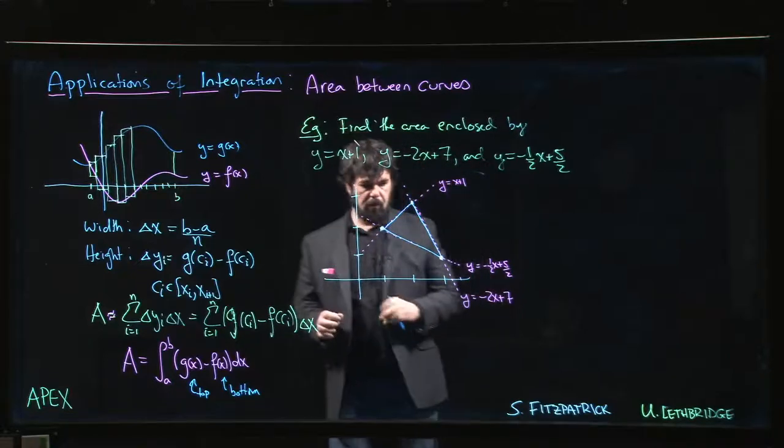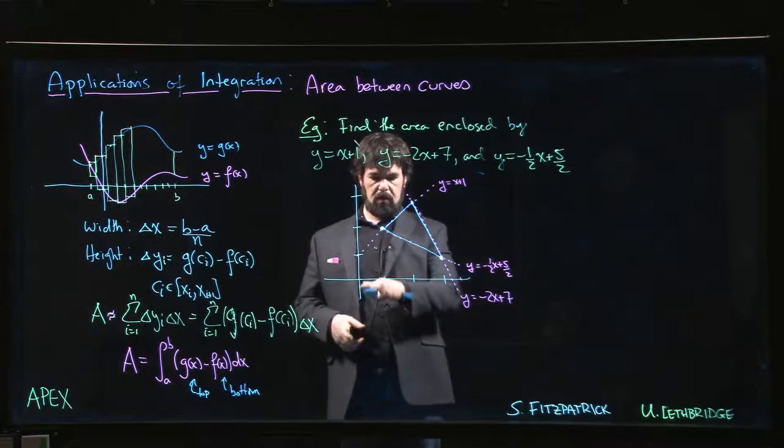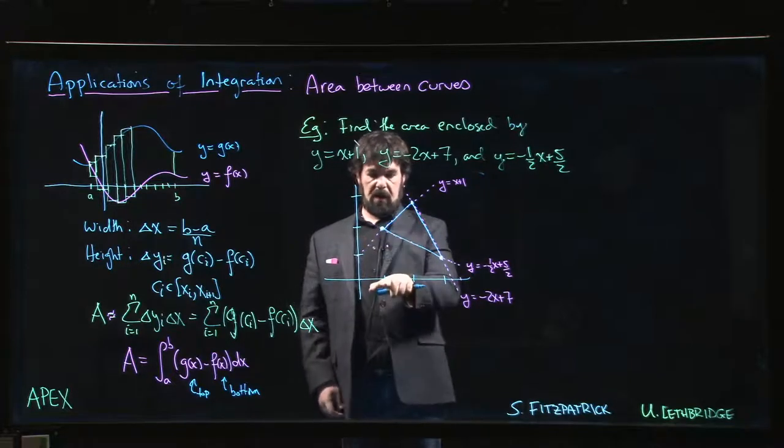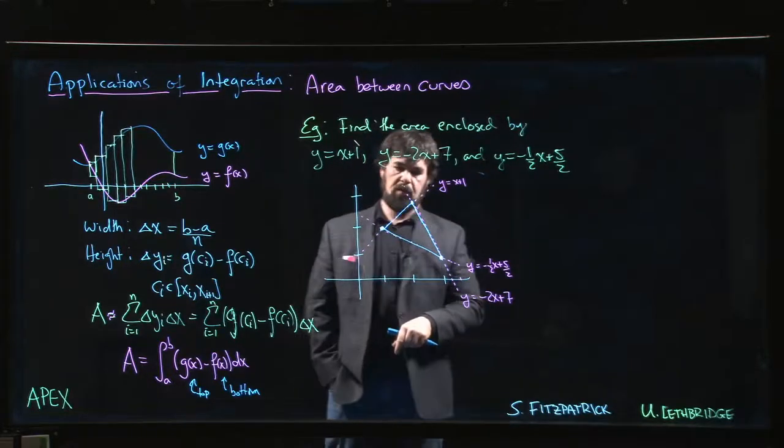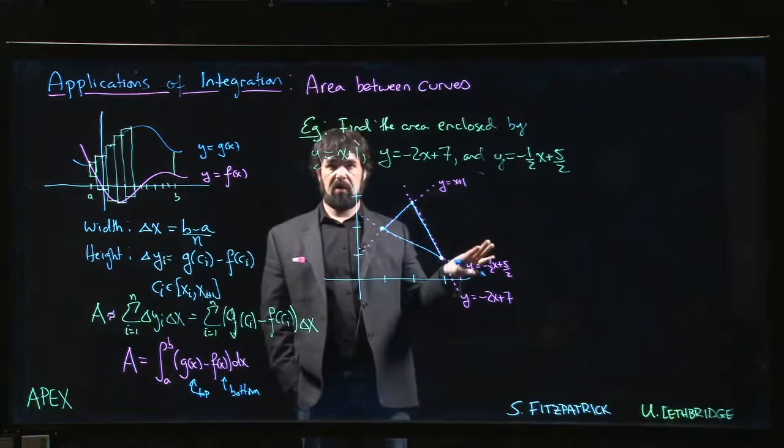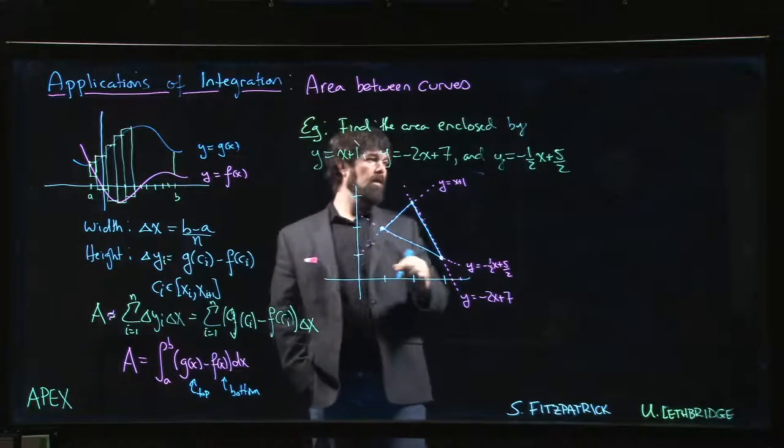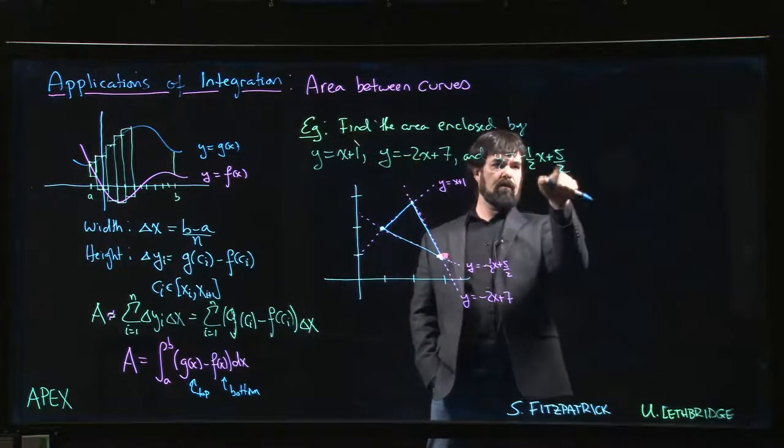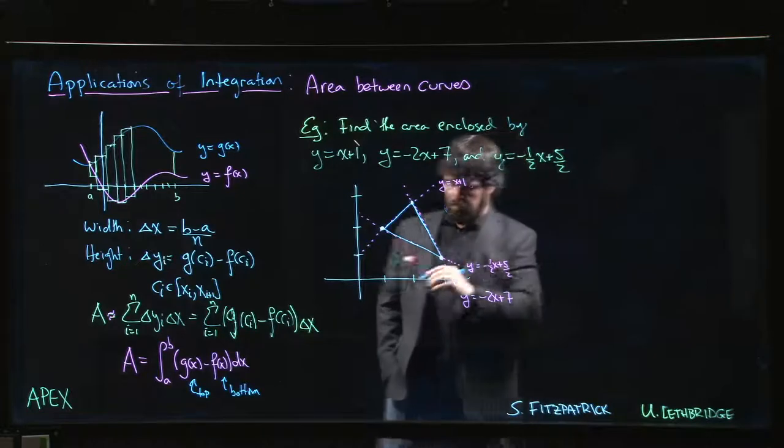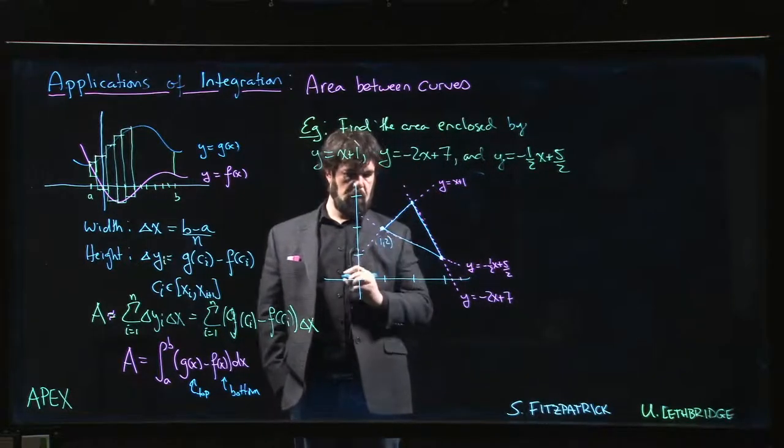And you can probably guess those points of intersection, but you can also check by plugging things in. So it looks like this is at about x equals 1 and it should be the intersection of these two lines. So let's just test that. So here if x is equal to 1 I get y is equal to 2. Here if x is equal to 1 I get 5 over 2 minus a half also 2. So this is the point 1, 2.